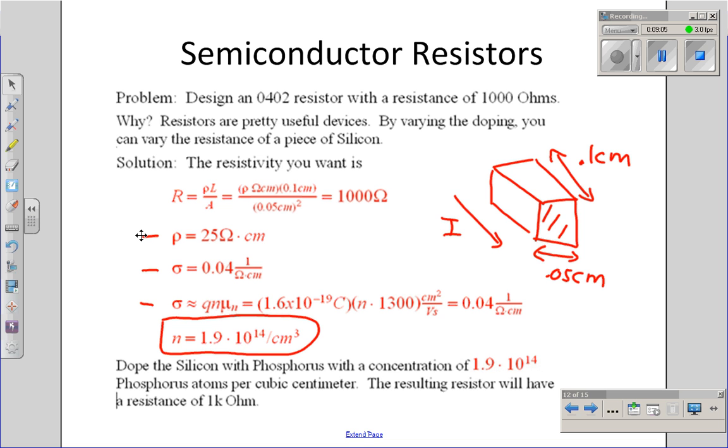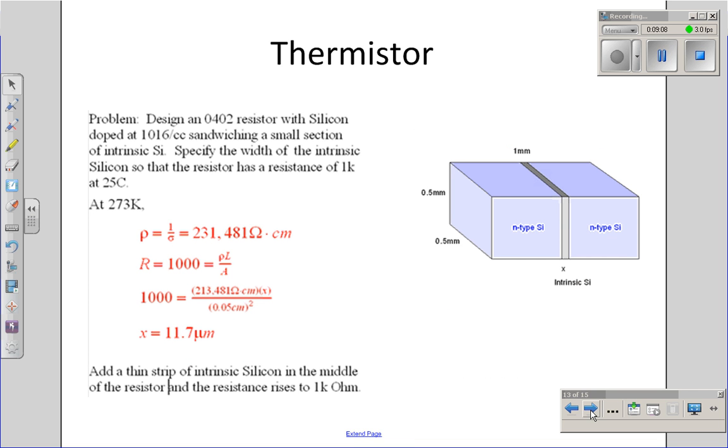Likewise, resistors are actually very easy to make out of silicon. I can also make temperature-sensitive resistors. Suppose, for example, I doped two sides of a piece of silicon very heavily, creating an n-type material. In the middle, I left this intrinsic. I'll have a fairly high resistance for intrinsic silicon.